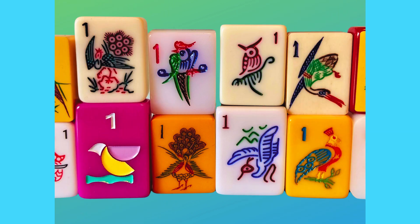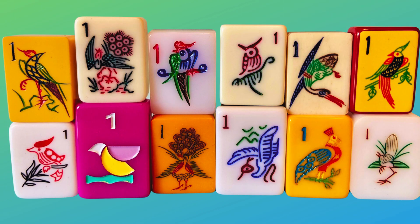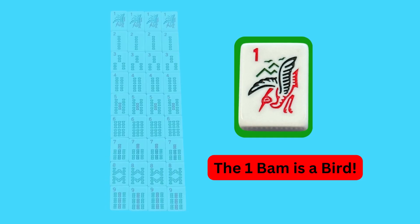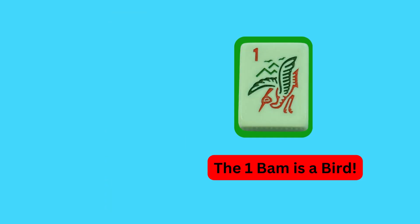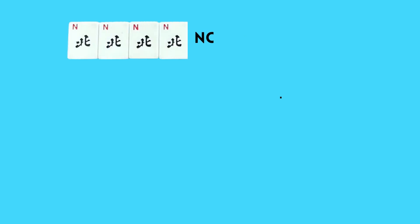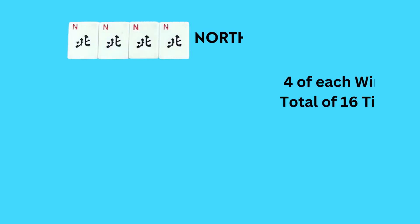The one bam doesn't look like the other tiles. The one bam is a bird, and it can be any bird at all. So in various sets, you'll see all sorts of birds, from owls to peacocks to sparrows and a variety. So just remember, a one bam is a bird.